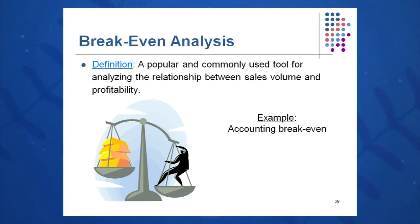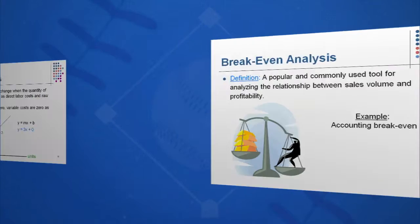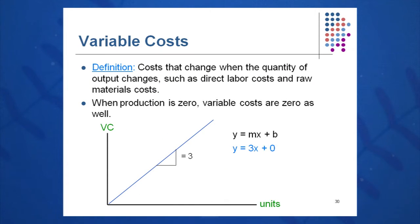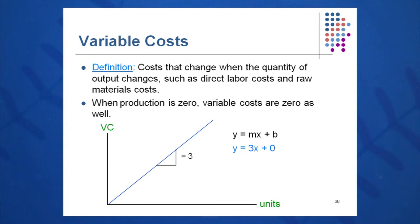Let's look at some terminology we might use in this analysis. First, variable cost. You see the variable cost curve here. Basically, it takes the form y equals mx plus b that you might have had in a math class many years ago, and cost changes when the quantity changes. So if I make one more unit, the variable cost goes up three dollars, and the formula for this curve becomes y equals 3x plus zero. It has a y-intercept of zero.